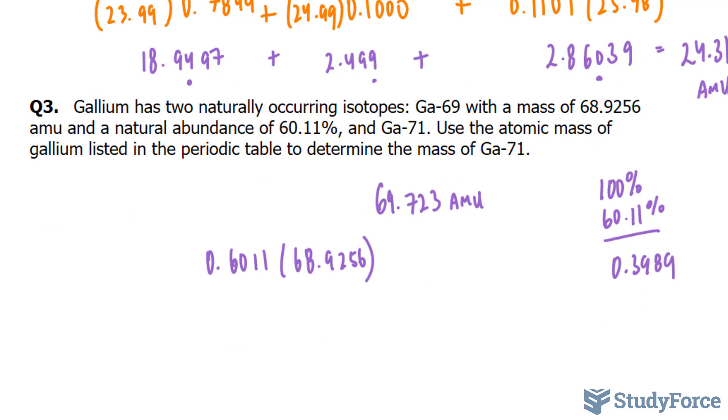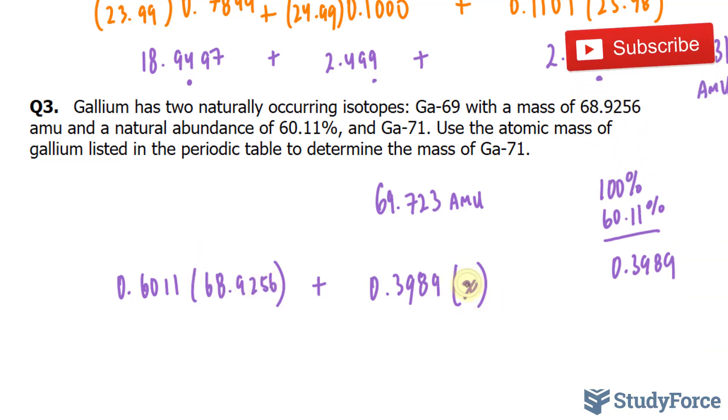OK, let's set this up mathematically. We have this plus the percentage of gallium-71, 0.3989. We don't know its mass, so I'm going to replace that with an x. Normally we would just put the number, but we don't have that number, so we can replace it with any letter that you like. And this is equal to 69.723.